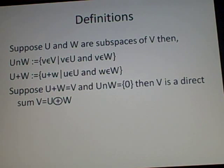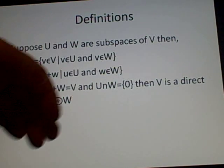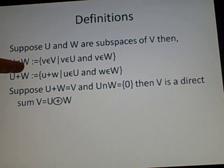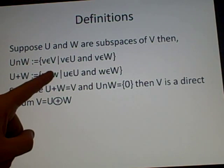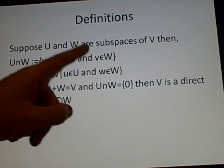First off, the definition. Suppose U and W are subspaces of V. Then U intersect W equals {v∈V | v∈U and v∈W}, and U+W equals {u+w | u∈U and w∈W}.